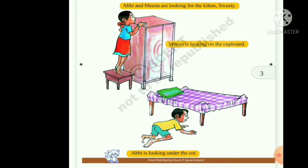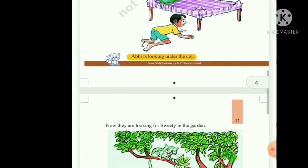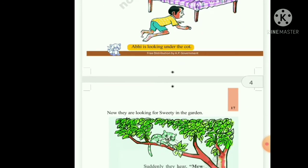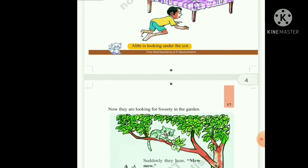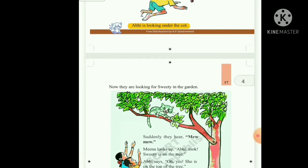Abhi is looking under the cot. Now they are looking for Sweetie in the garden. Suddenly, they hear meow meow.